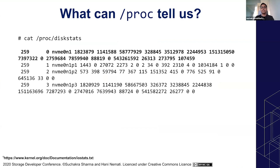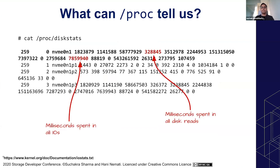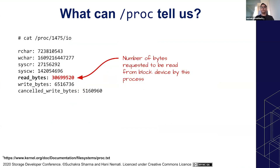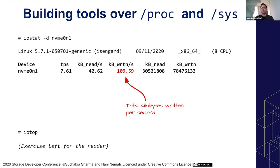You can access a lot of information about what's happening with the disk, with specific processes, and how block requests are being made by doing things like cat /proc/diskstats. It gives you stats, but as you can see, these are cryptic numbers — for example, milliseconds spent in I/O. A lot of information is available in the proc file system but not easily readable. So tools like iostat are built on top of procfs and sysfs to give you much more human-readable information about disk pressure and process I/O consumption.